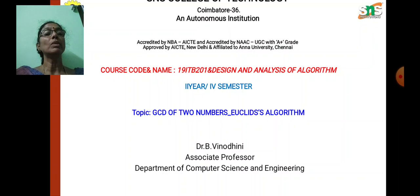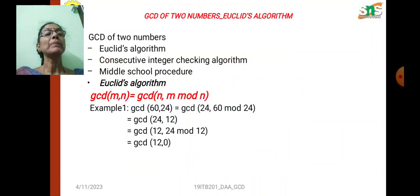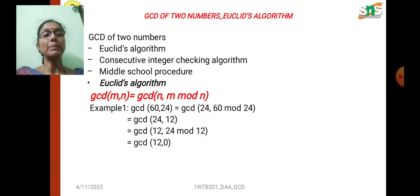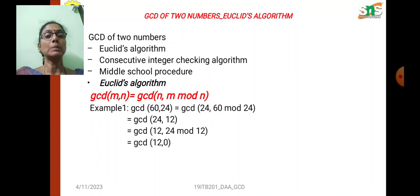GCD is nothing but the greatest common divisor of two numbers. To calculate the greatest common divisor, we have three methods: one is the Euclid Algorithm, second is the consecutive integer checking algorithm, and third is the middle school procedure. In this class, we are going to see how to calculate the GCD using the Euclid Algorithm.